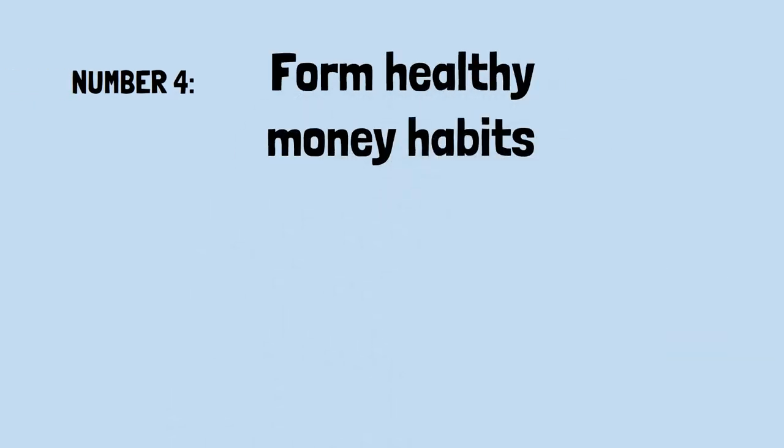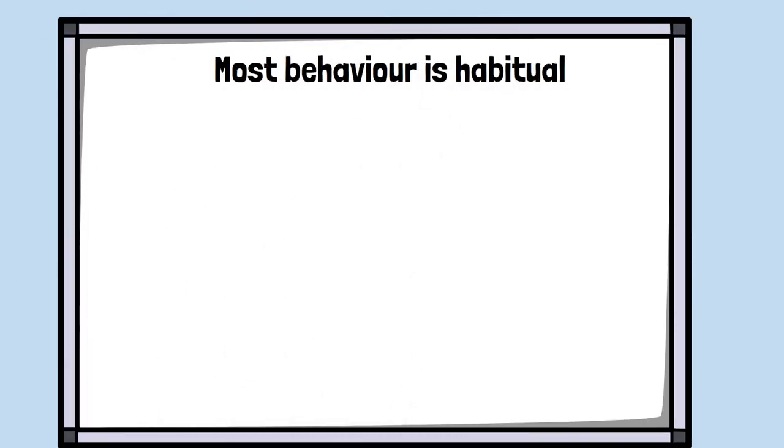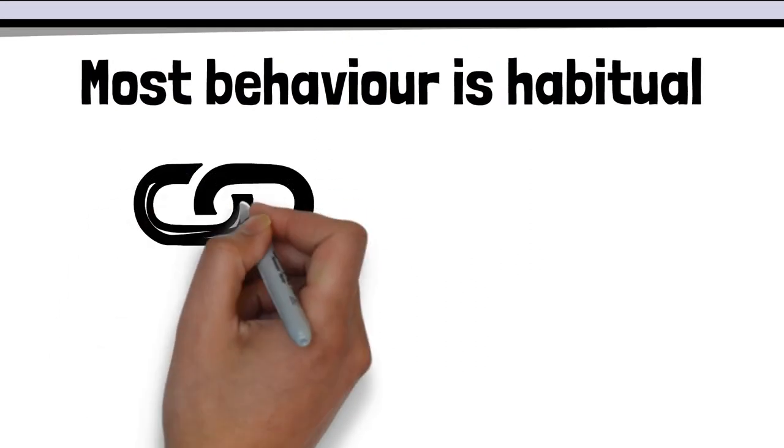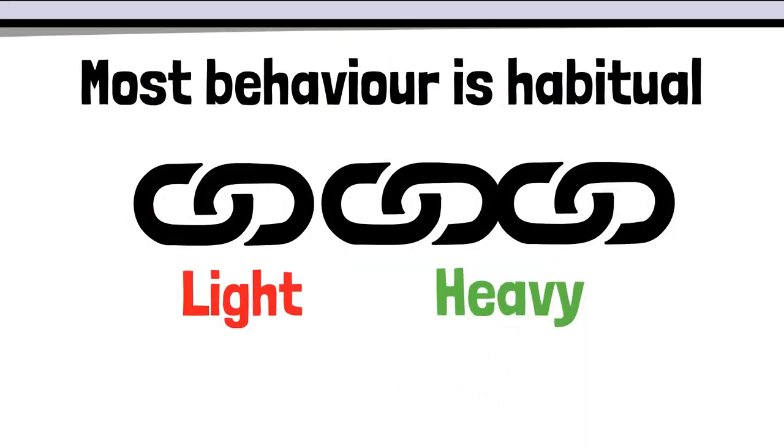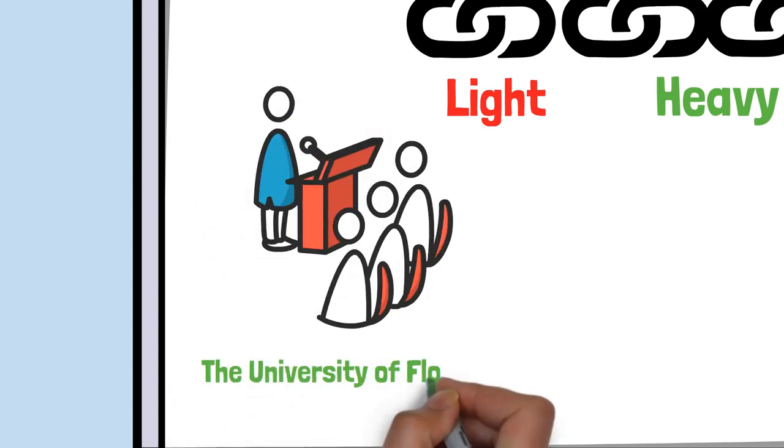Number four. Form healthy money habits. Most behavior is habitual, and they say that the chains of habit are too light to be felt until they are too heavy to be broken, said Buffett in a speech to the University of Florida.